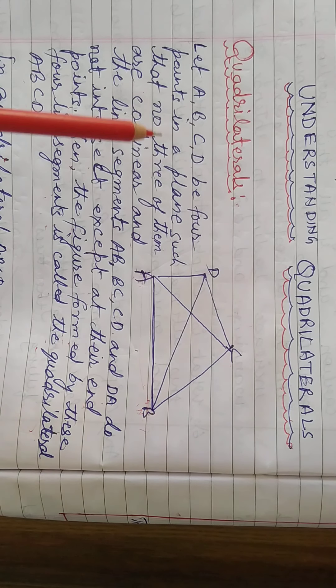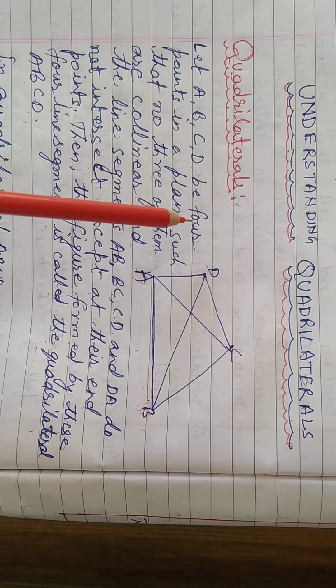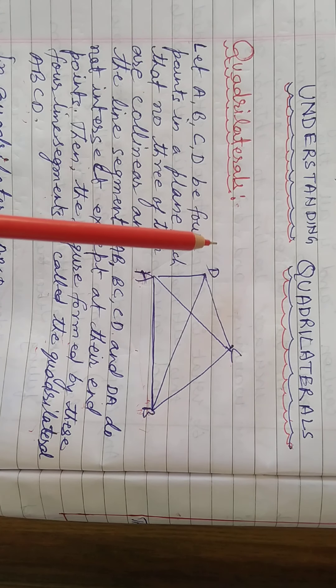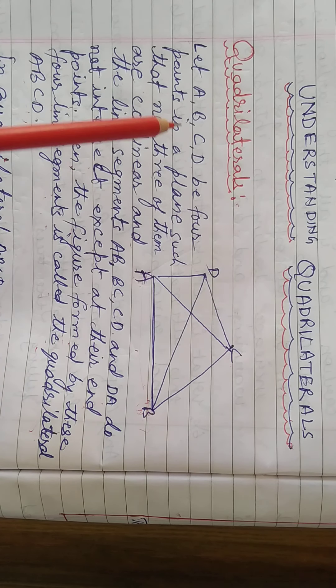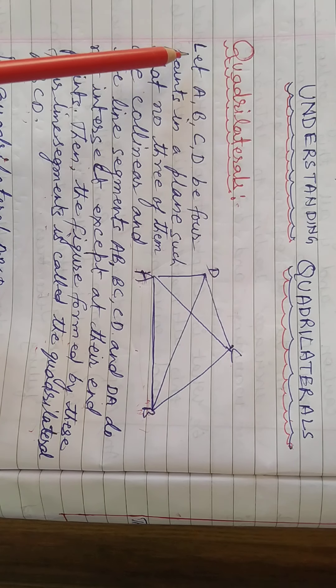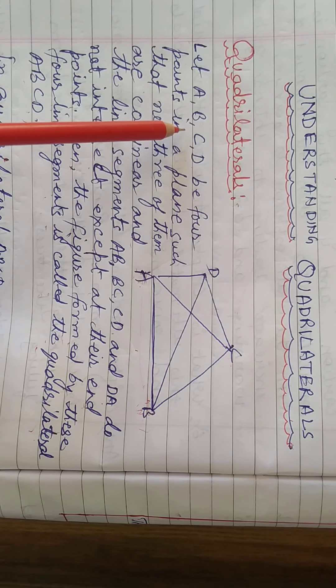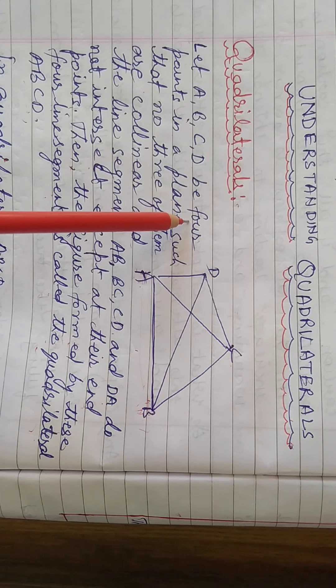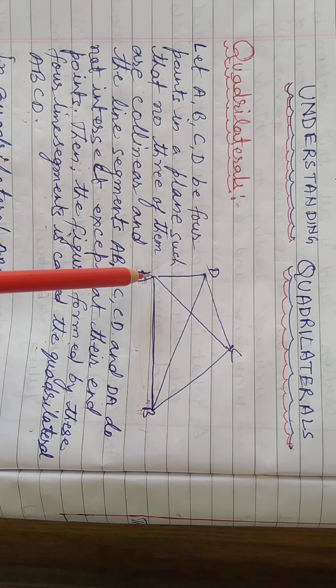What is a quadrilateral? Let A, B, C, D be four points.